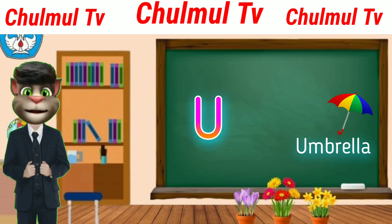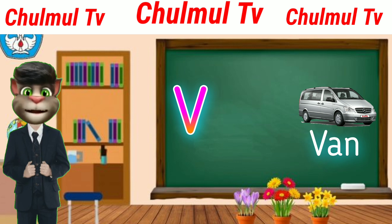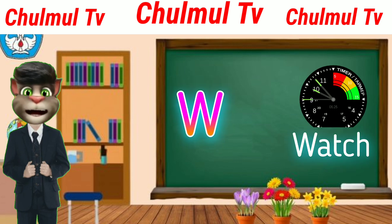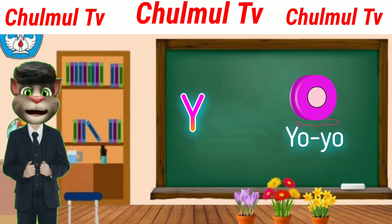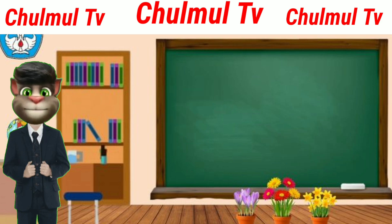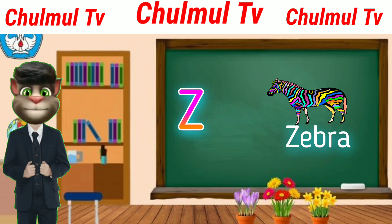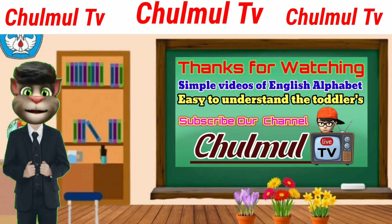U for umbrella, V for van, W for watch, X for X-ray, Y for Yoyo, Z for zebra. All videos of English alphabet.